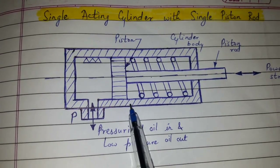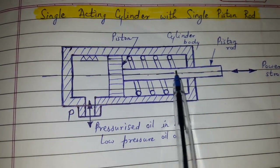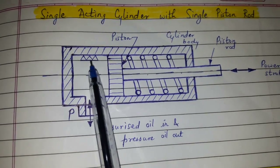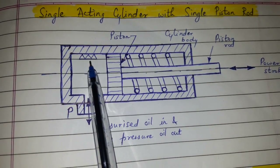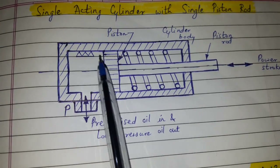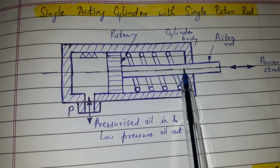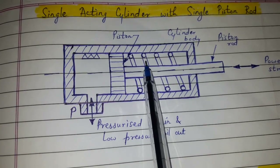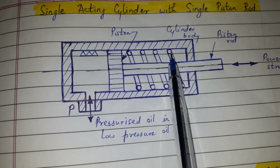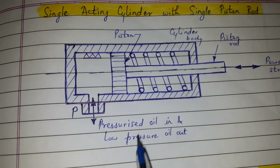It consists of a cylindrical body in which a cylinder bore is created. The inside surface is machined with close tolerance and is having high finish. The piston reciprocates in the bore. On the back side of the piston, a compression spring is used around the piston rod.